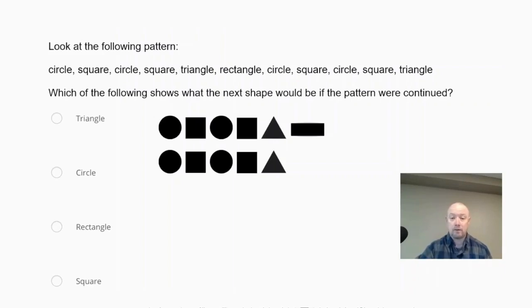I'll draw on here the different shapes that we have. We start out with the circle, and then we have our square, circle, square, triangle, rectangle, and then the pattern starts to repeat again: circle, square, circle, square, triangle. So the question is, what would the next shape be in the pattern? You can see when we draw those in that it would be a rectangle.